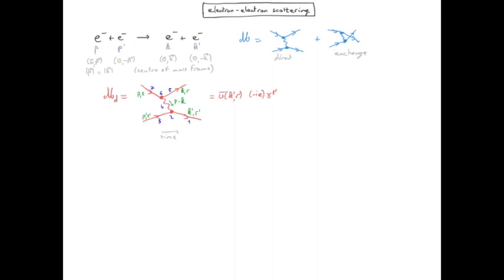So in three, we have a u spinner. Then in four, we have the propagator for the photon. In principle, we should integrate over the momentum for the internal line, the photon.